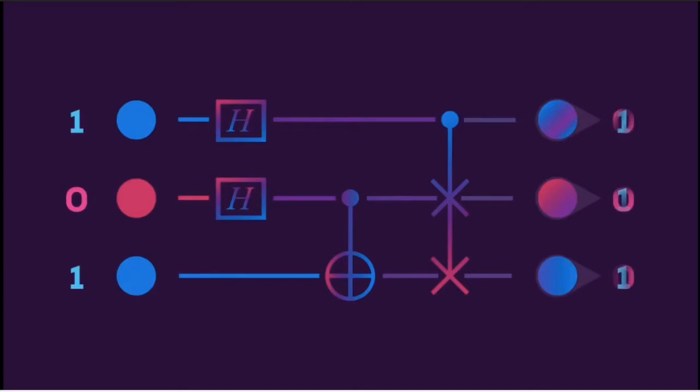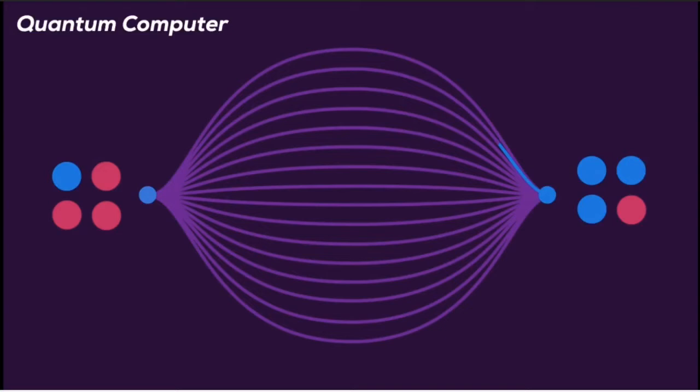Finally, it measures the outcome, collapsing the superposition to an actual sequence of zeros and ones. This means you get the entire set of calculations that are possible with your algorithm — all of them at the same time.